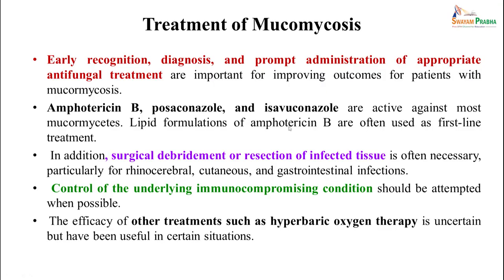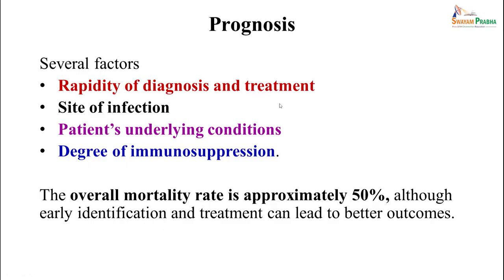Treatment: early recognition, diagnosis, and prompt antifungal administration are critical. Amphotericin B, posaconazole, and isavuconazole are active against most mucormycetes; lipid formulations of amphotericin B are often used as primary treatment. Surgical debridement or resection is important for rhinocerebral, cutaneous, and gastrointestinal forms. Control of underlying immunocompromised condition and hyperbaric oxygen therapy may be needed. Prognosis is poor — overall mortality is approximately 50%, though early identification and treatment can improve outcomes.